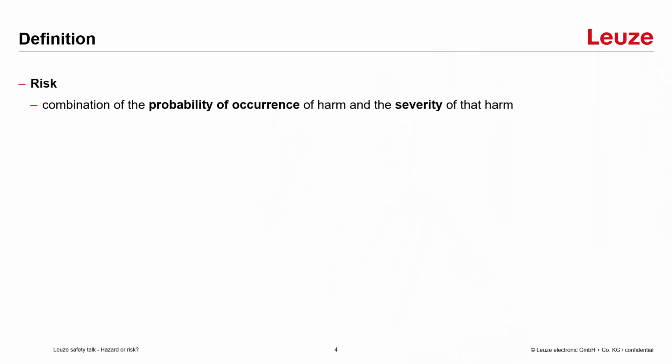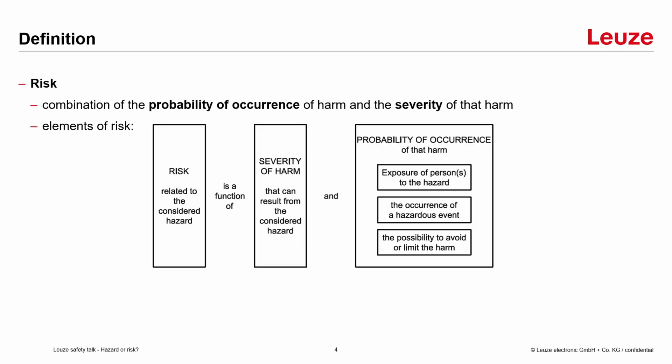The risk is the combination of the probability of occurrence of harm and the severity of that harm. The elements of risk are defined in the standards. Risk is a function of the severity of the harm — so is it only a little scratch on my hand, or can I lose my arm, for example? — and the probability of occurrence.